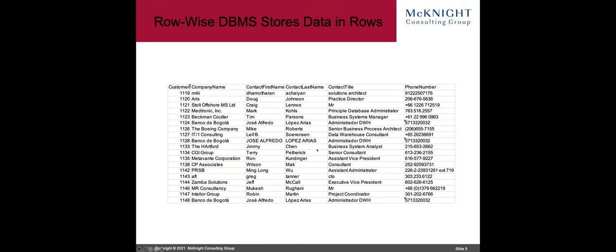Most of the time a row-wise database stores all the columns in the order they are defined in the catalog — the same order you get back from a select star. Some databases store like data types together and sort out the ordering via the catalog. Generally speaking, all columns have to be stored consecutively for a row.